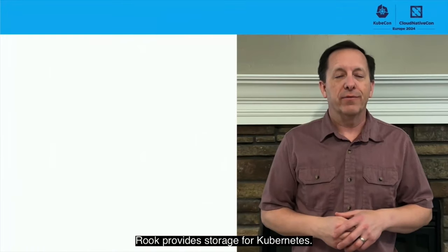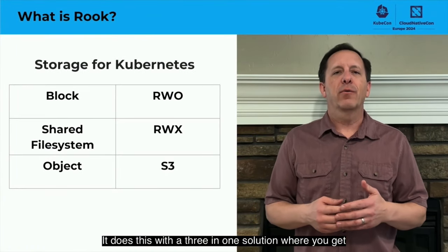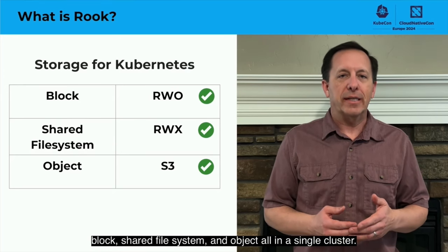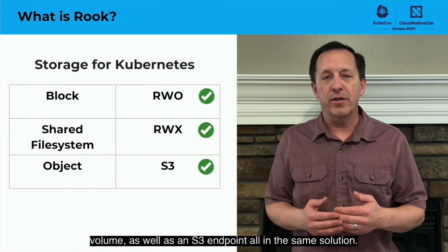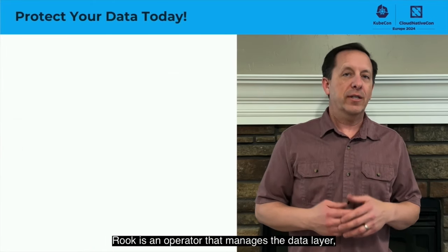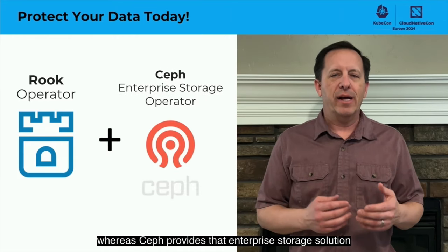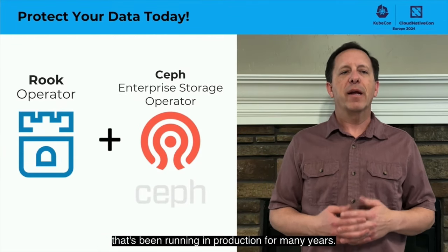Hi, I'm Travis Nielsen, Rook maintainer with IBM. Rook provides storage for Kubernetes with a three-in-one solution where you get block, shared file system, and object all in a single cluster. This means you could have a ReadWriteOnce or ReadWriteMany volume, as well as an S3 endpoint, all in the same solution. Rook is an operator that manages the data layer, where Ceph provides that enterprise storage solution that's been running in production for many years.